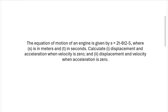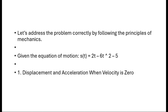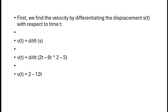And (2) displacement and velocity when acceleration is zero. Let's address the problem correctly by the principles of mechanics. Given the equation of motion: s(t) = 2t minus 6t² minus 5. For Part 1 — displacement and acceleration when velocity is zero — we first need to find the velocity by differentiating the displacement s with respect to time.